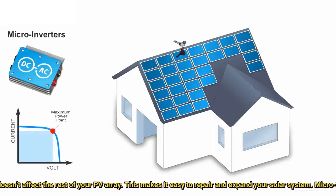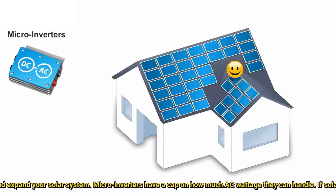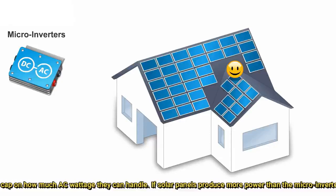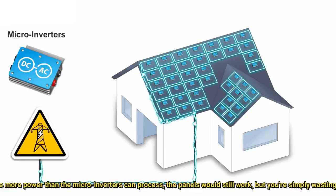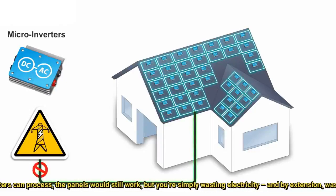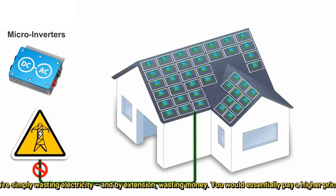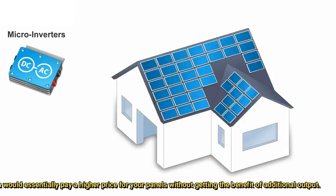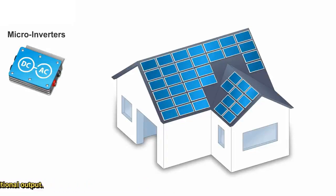This makes it easy to repair and expand your solar system. However, microinverters have a cap on how much AC wattage they can handle. If solar panels produce more power than the microinverters can process, the panels would still work, but you are simply wasting electricity and, by extension, wasting money — essentially paying a higher price for your panels without getting the benefit of additional output.